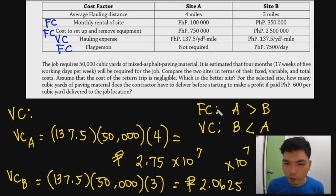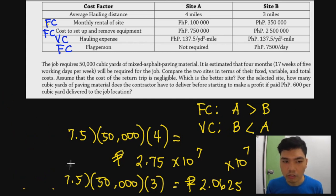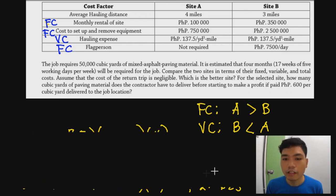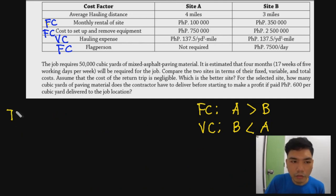Since Site A is better by fixed cost but Site B is better by variable cost, we need to consider total cost to make the final decision. Total cost equals fixed cost plus variable cost.